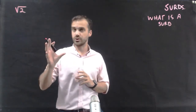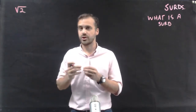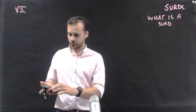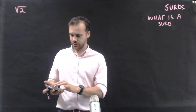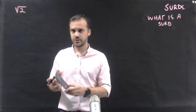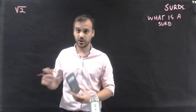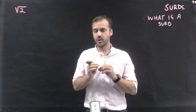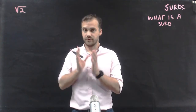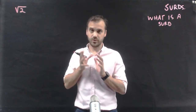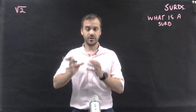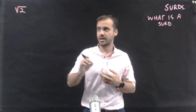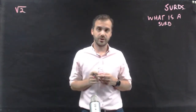So, the square root of 2 is a surd. The reason it's a surd is if you type square root of 2 into your calculator, it gives you a decimal that goes on forever and ever. The only way that you can give the exact value of the square root of 2 is by saying 'the square root of 2'. You can't give an exact value without having that root there.